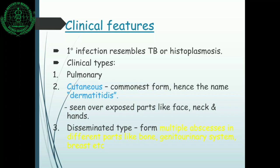Blastomycosis is endemic in North America. Clinical features again resemble tuberculosis or histoplasmosis, with clinical types including the pulmonary type; the cutaneous type, which is a very common form with lesions over exposed parts such as the face, neck, and hands; and the disseminated type, which presents as multiple abscesses in different parts such as bones, the genitourinary system, and the bloodstream.